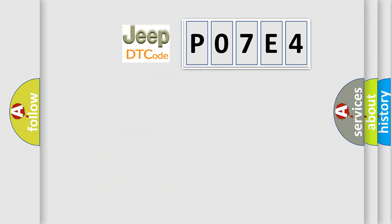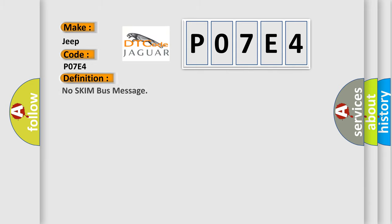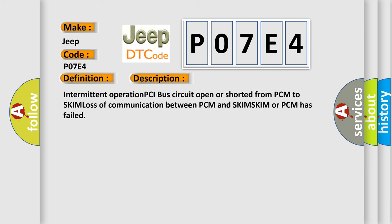So, what does the Diagnostic Trouble Code P07E4 interpret specifically for Jeep car manufacturers? The basic definition is No SKIM bus message. And now this is a short description of this DTC code: Intermittent operation, PCI bus circuit open or shorted from PCM to SKIM, loss of communication between PCM and SKIM, or SKIM or PCM has failed.